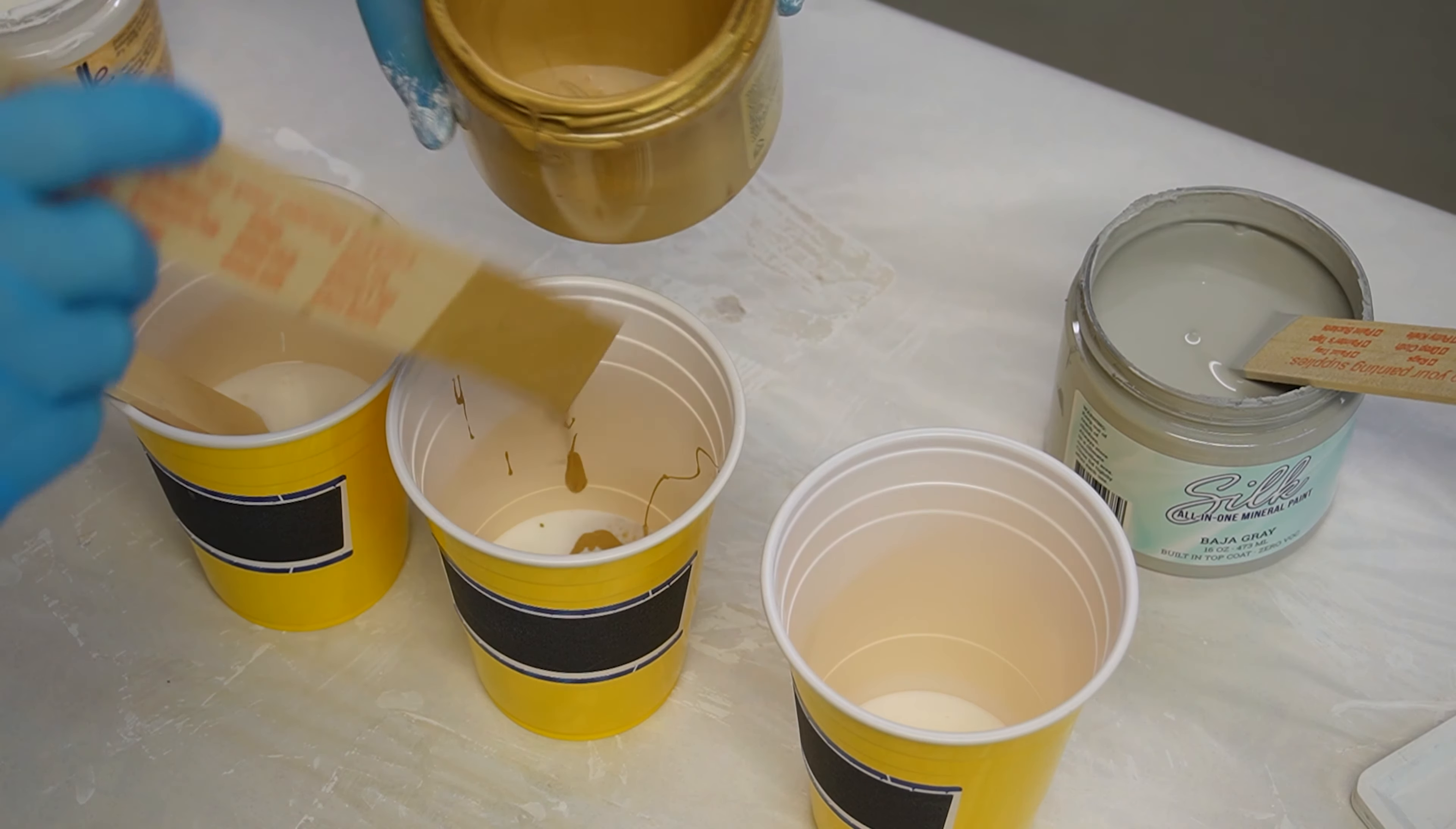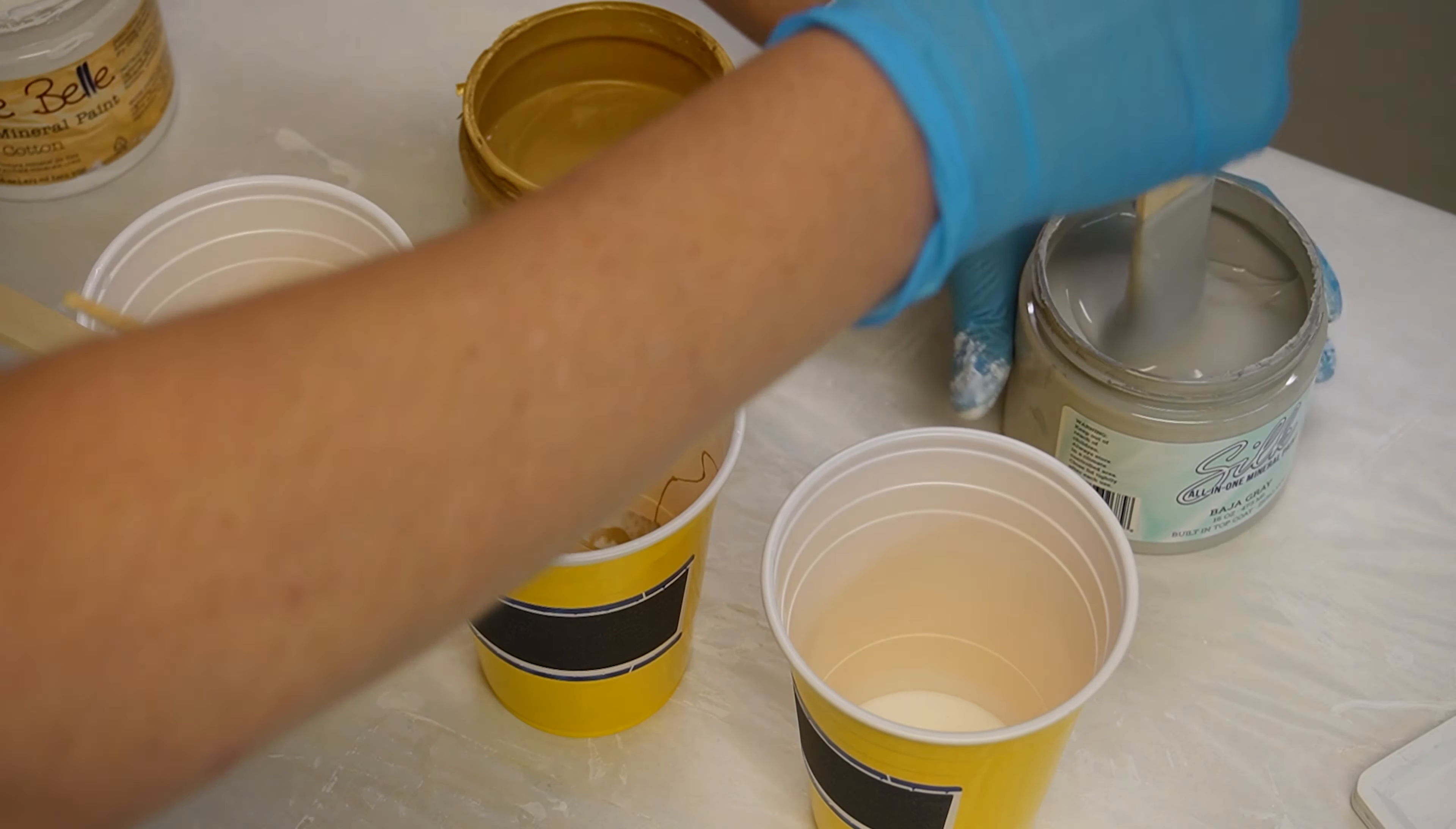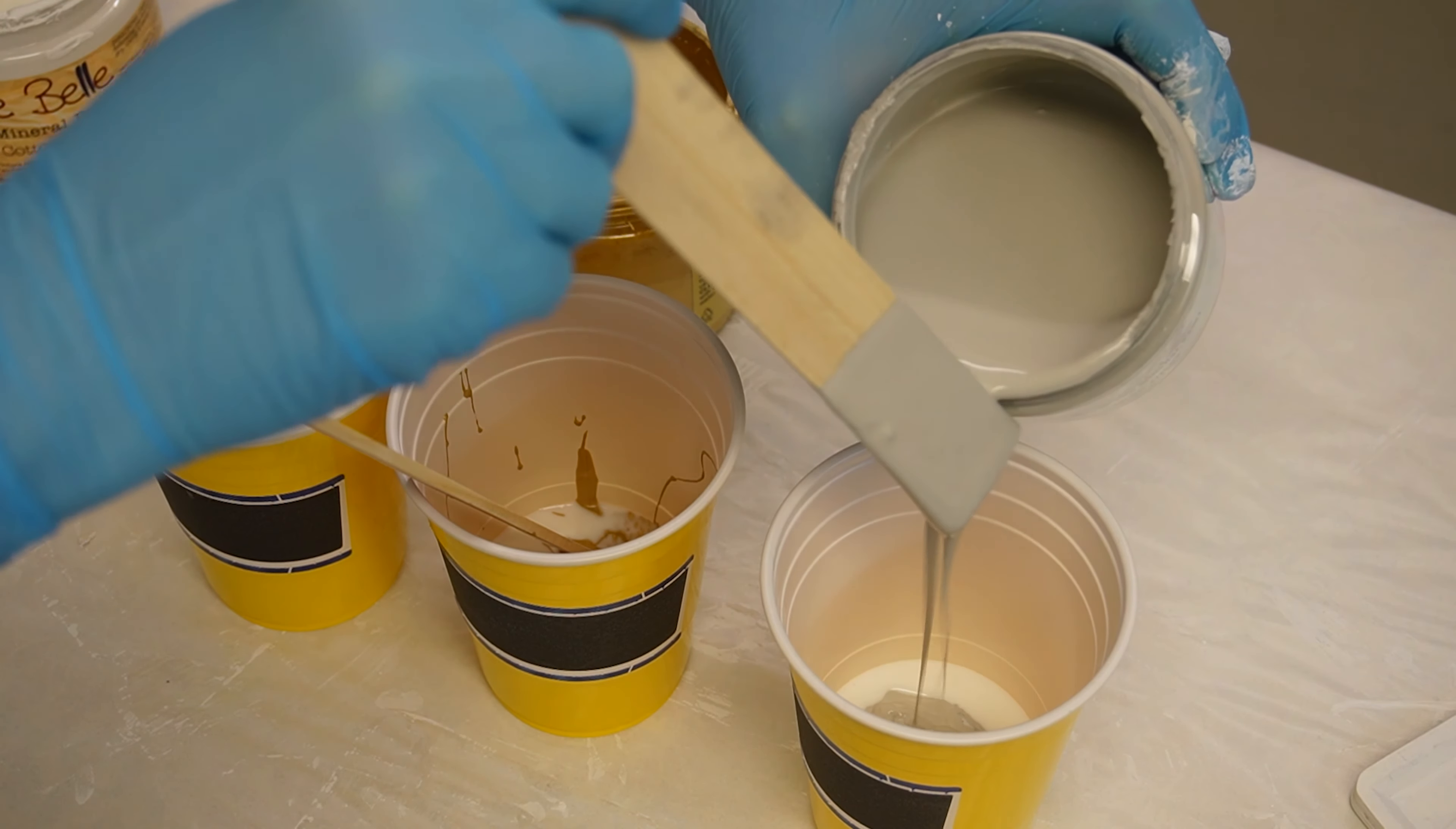But you could measure if you feel more comfortable. For instance, the 50-50 ratio, you would add a quarter cup of white paint to a quarter cup of Floetrol or a quarter cup of gray paint to a quarter cup of Floetrol. You just want to keep it an even mix.